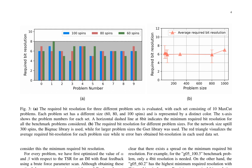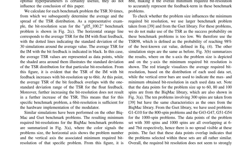To determine the optimal bit resolution, the authors perform a brute-force parameter scan to optimize the hyperparameters alpha and beta with respect to the TSR for each benchmark problem. They calculate the TSR 30 times for each problem and determine the average and spread of the TSR distribution. The results for the G05-100.2 benchmark problem demonstrate that the TSR of the IM with bit feedback increases with bit resolution up to 6 bits, after which it plateaus. They find that the minimum required bit resolution does not strongly depend on problem size — for instance, G05-100.3 requires only 4-bit resolution while G05-60.2 requires 8-bit resolution.